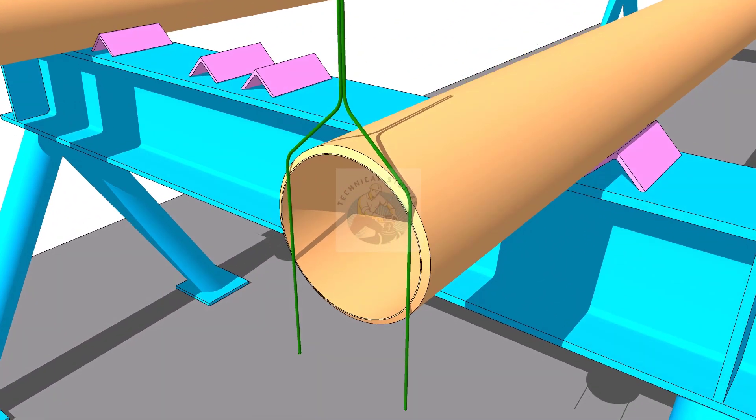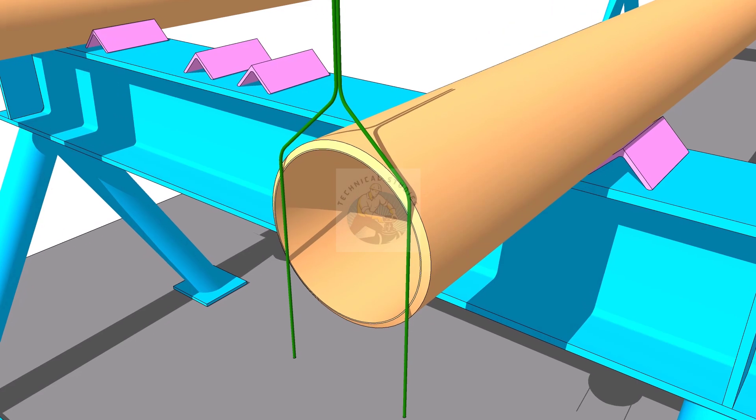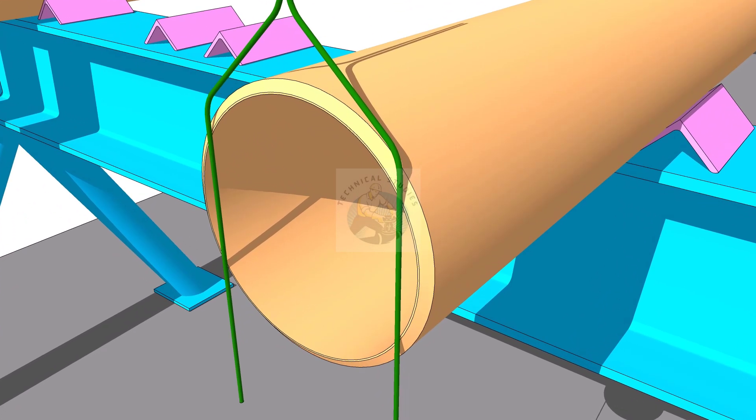Hold a gap rod on the face of the pipe. You can attach it on the pipe by using masking tape or a small tack weld.